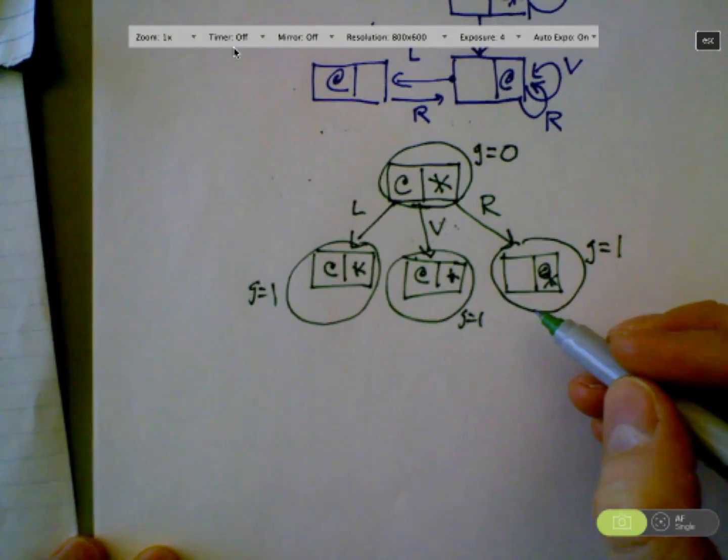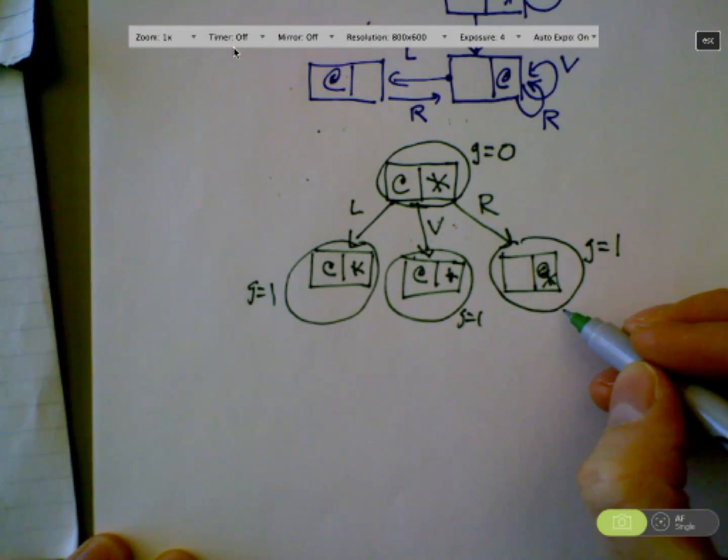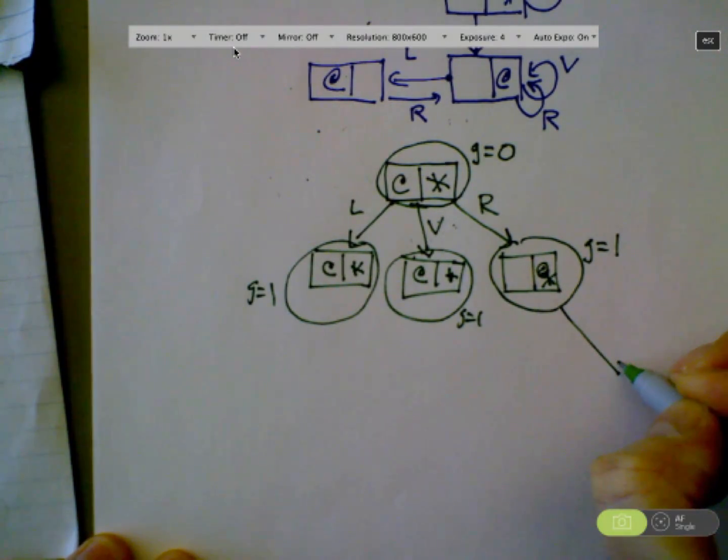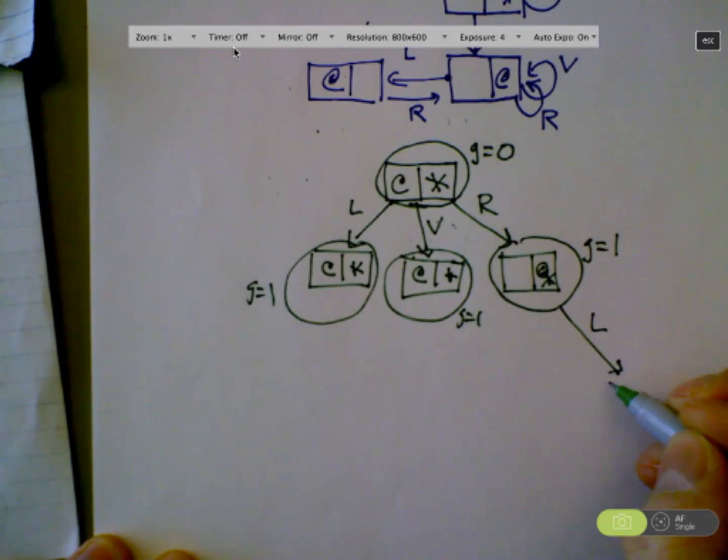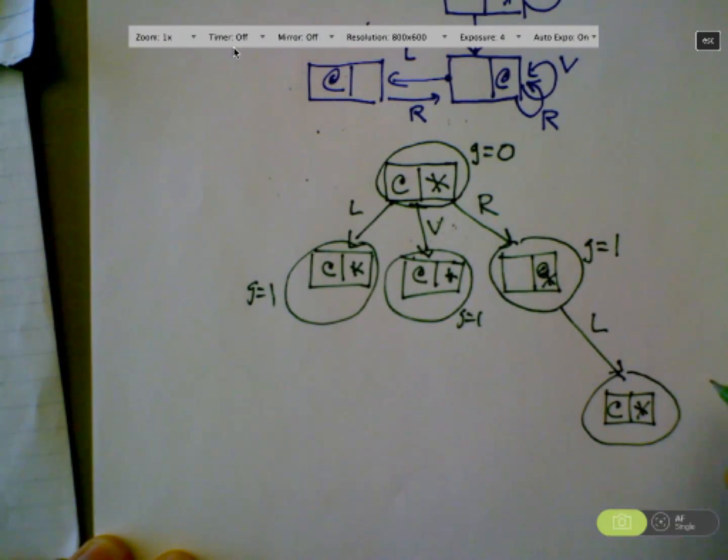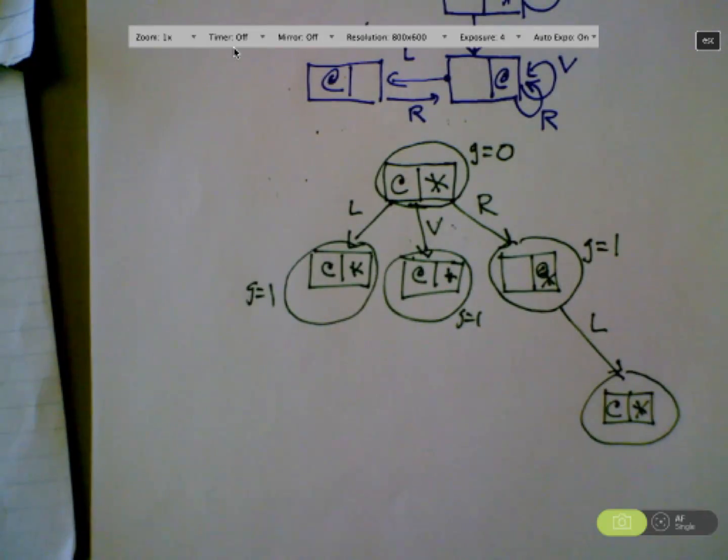So we talked a little bit last time about duplicates. Here, for example, I could decide to go left. And if I were to do that, I would end up in a state of the world that, in fact, I had already been to.